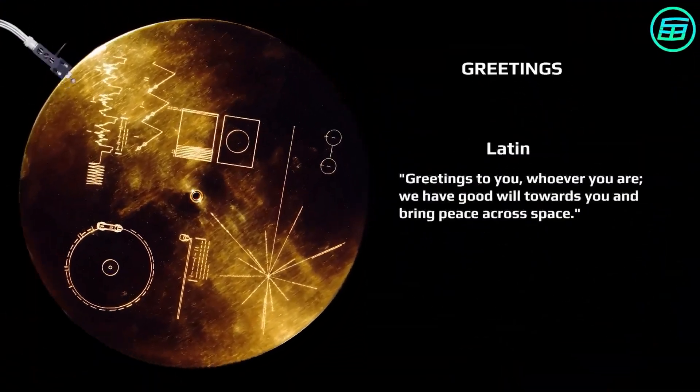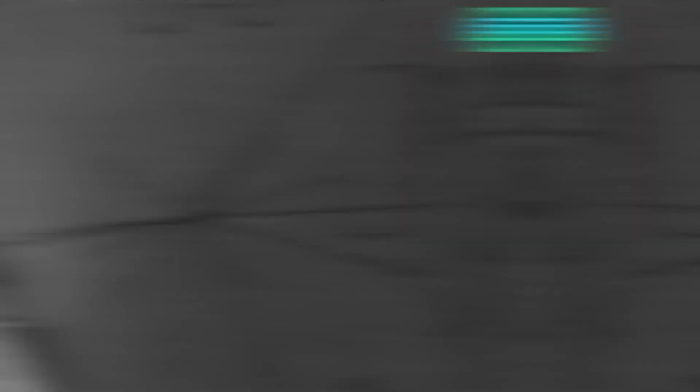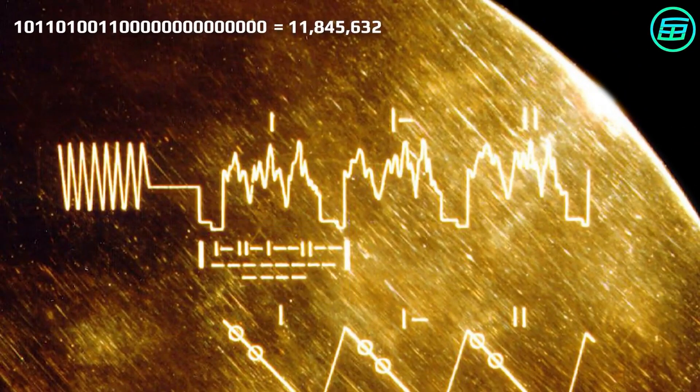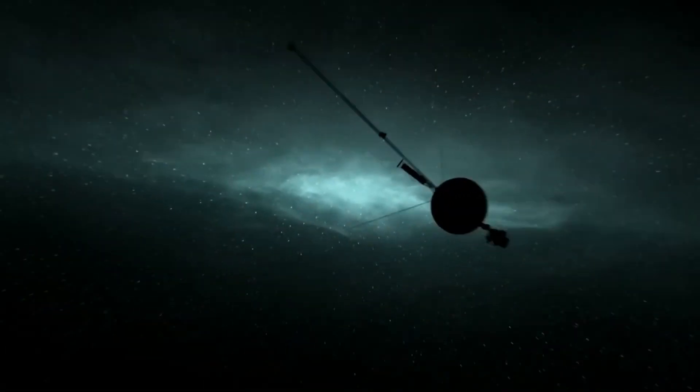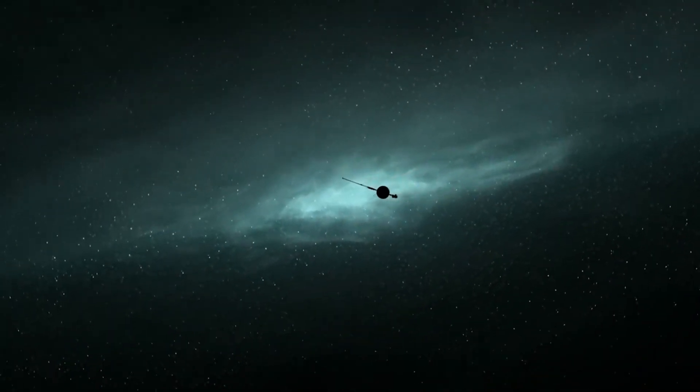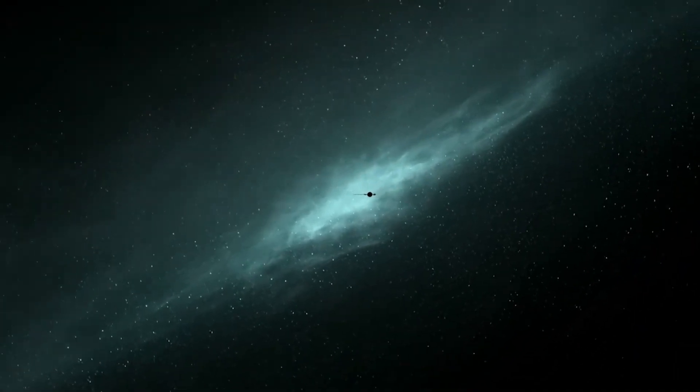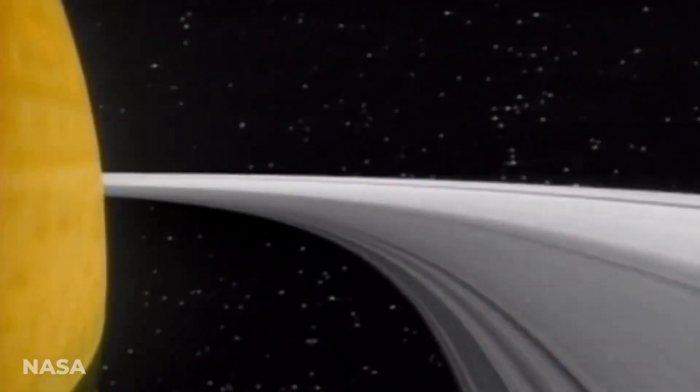Equipped with advanced instruments for their time, the Voyagers embarked on a grand tour of the outer planets, capturing breathtaking images and gathering data that would transform our understanding of the solar system. From Jupiter's turbulent storms to Saturn's majestic rings, the spacecraft brought the cosmos closer to home.